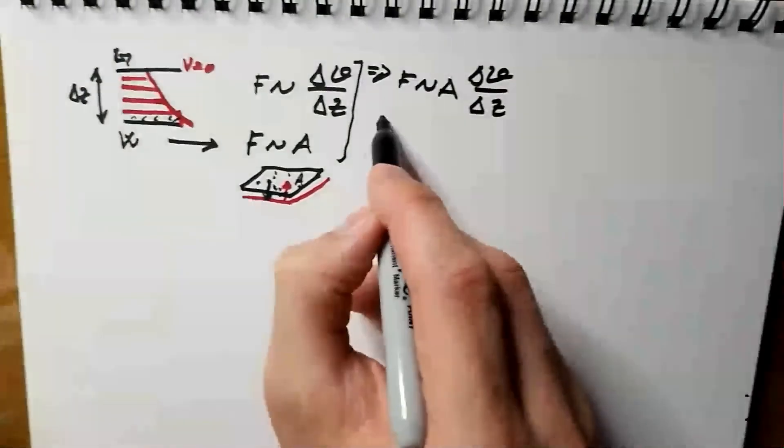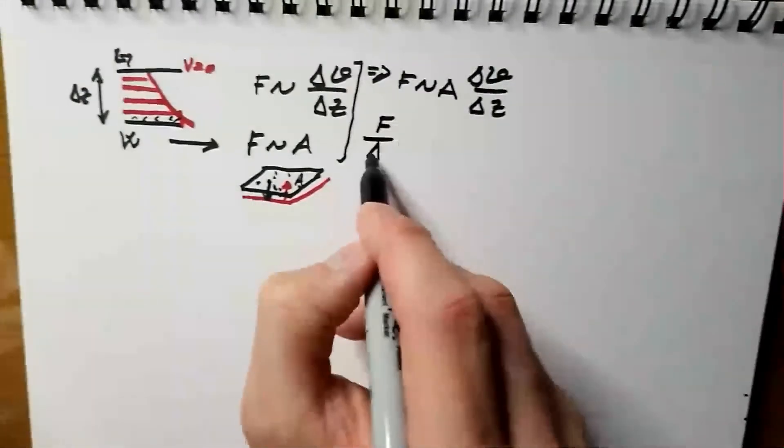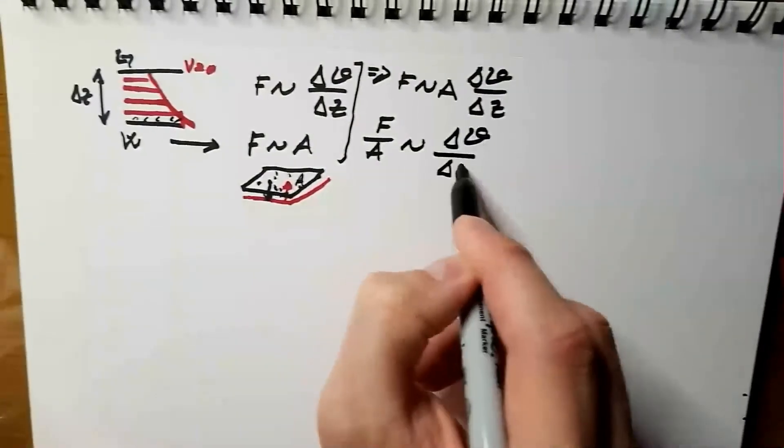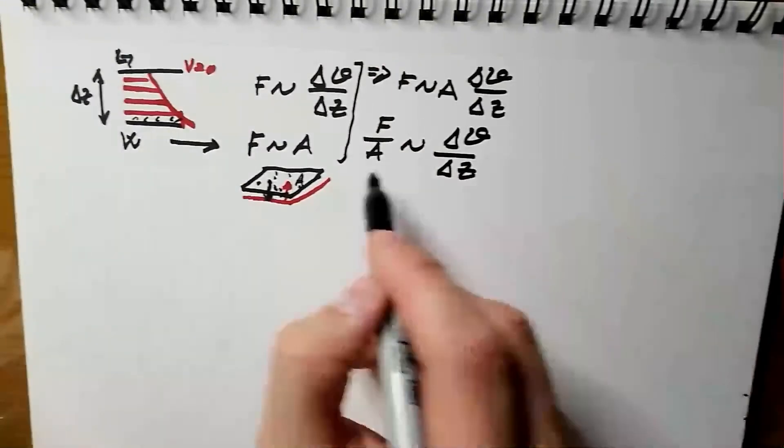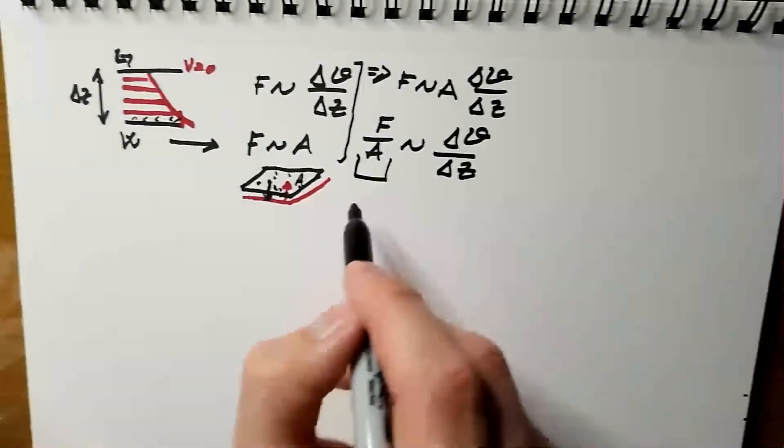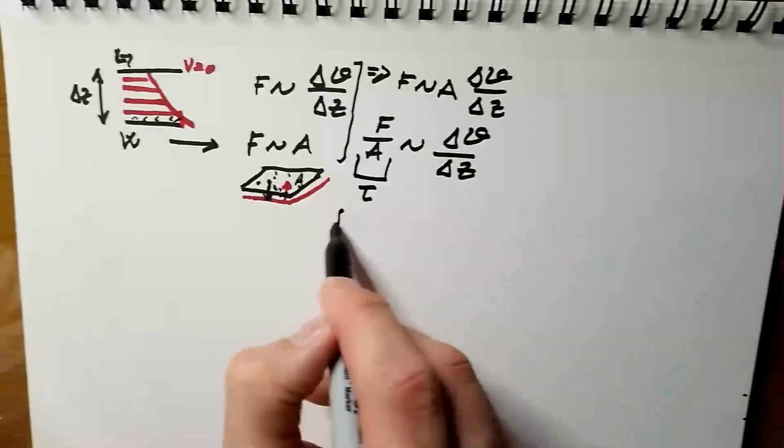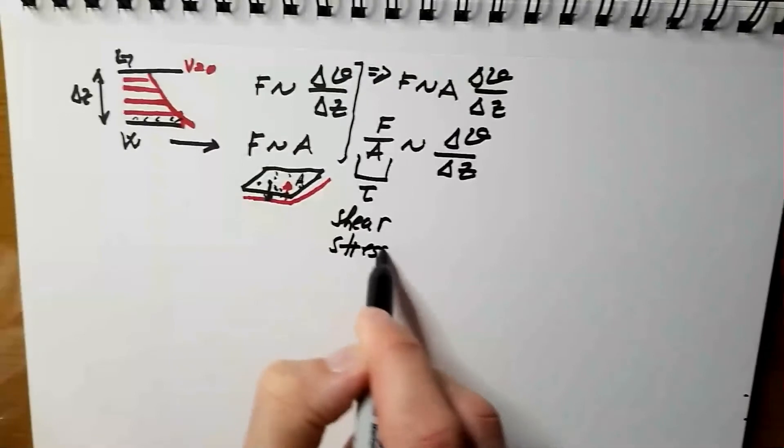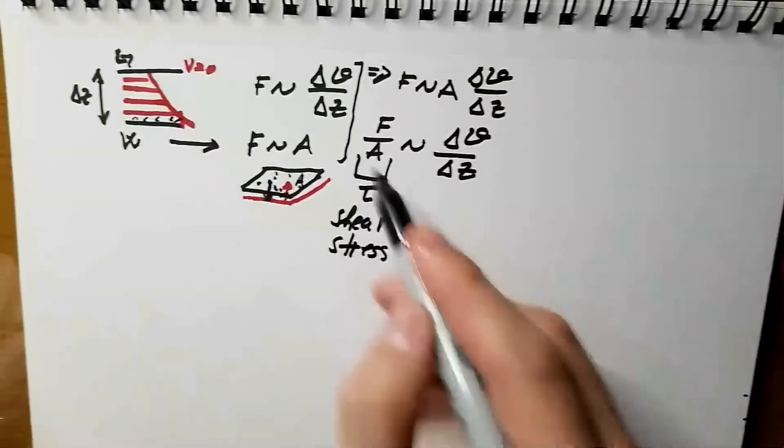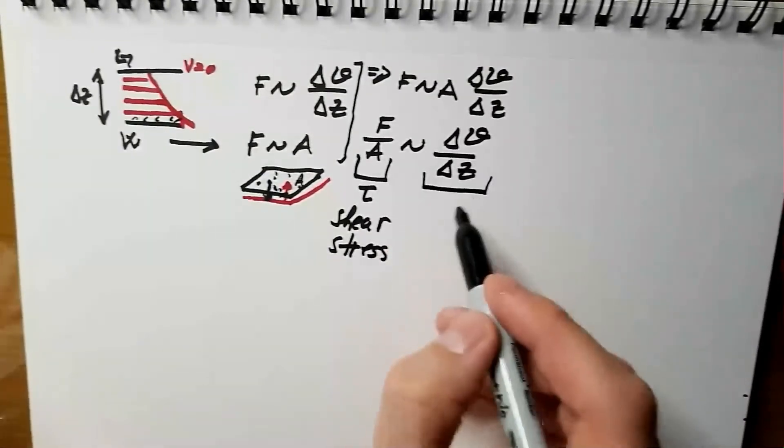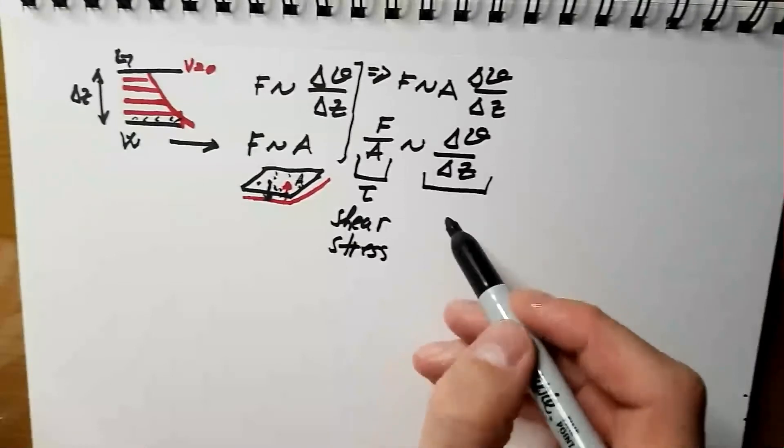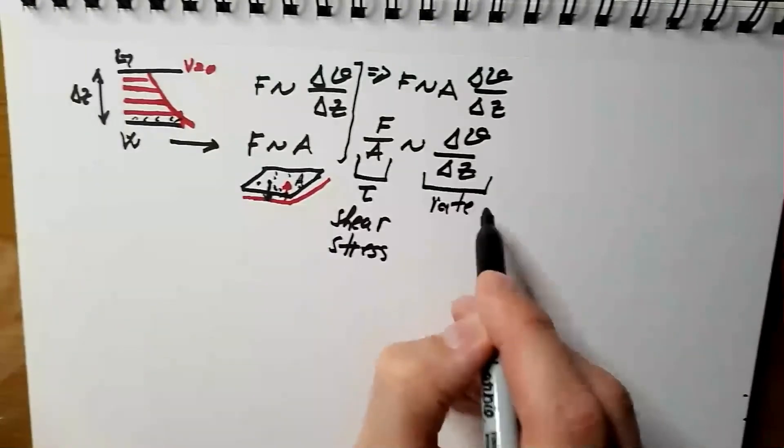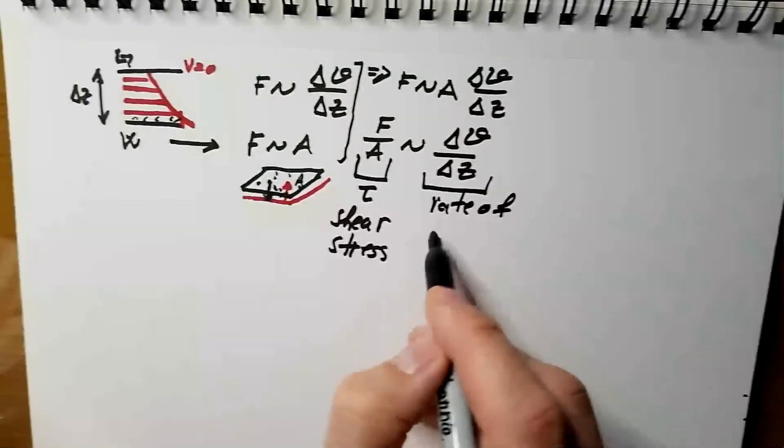I can also express this as force over area, which is proportional to delta V over delta Z. And here we are. This quantity, we call it tau, is shear stress. We see it has units of pascals as pressure, and this quantity over here is basically velocity gradient, but we also call it sometimes rate of shear deformation.